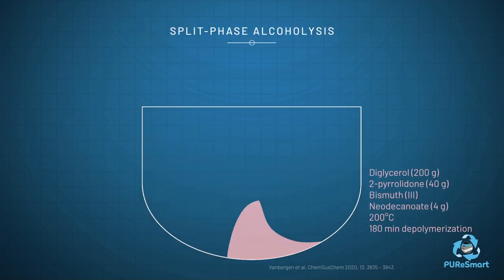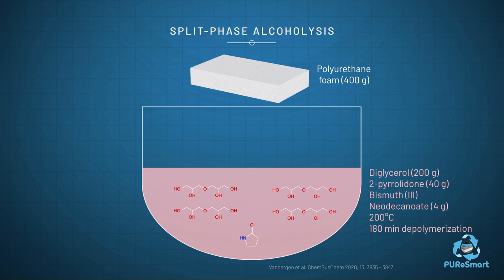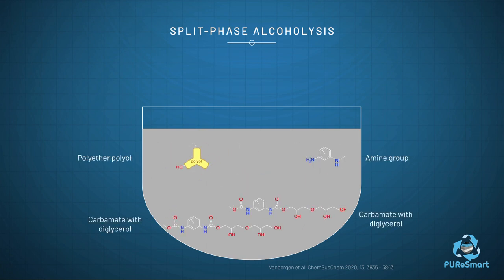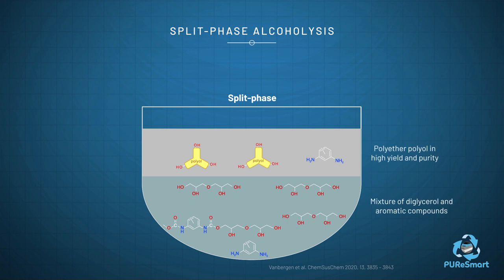The use of 2-pyrrolidone as an additive allowed for a substantial lowering of the alcoholising agent input to just half of the PU foam by weight. This also allowed for the use of more polar alcoholising agents, such as diglycerol. Alcoholysis of the urethane and urea groups in diglycerol results in the formation of carbamates with diglycerol and release of the polyether polyol and amine groups. The polyether polyol was recovered in higher purity and yield due to a better phase separation between the apolar polyether polyol and the very polar diglycerol.